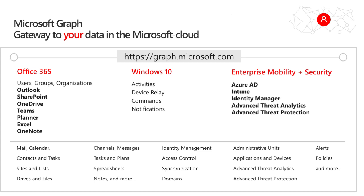What does it look like to build an application integrated with Office 365? At the very bottom we've got access to a lot of different data sources inside of Office 365, and the best way to get to them is using the Microsoft Graph API. That Microsoft Graph API is going to essentially act as a proxy to all of these different services that are available to us.